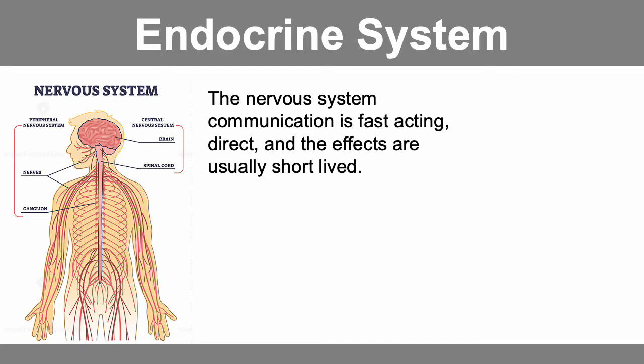Communication in the nervous system is fast and direct. Things are directly plugged into their target cells or target tissues, such as innervation in muscles — motor neurons synapsed directly onto the muscles, neurons synapsed directly onto other neurons. Whereas in the endocrine system, a gland like the pituitary may secrete a hormone, a chemical messenger, and its target tissue may be on the other side of the body, and it relies on the bloodstream, the circulatory system, to get there.